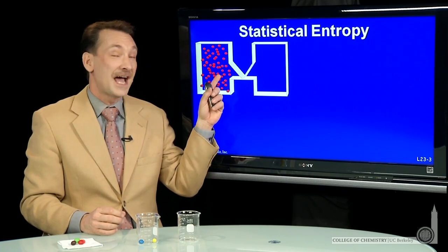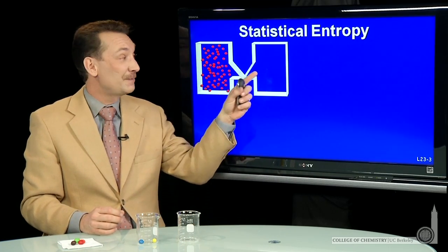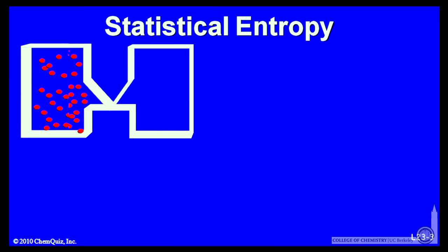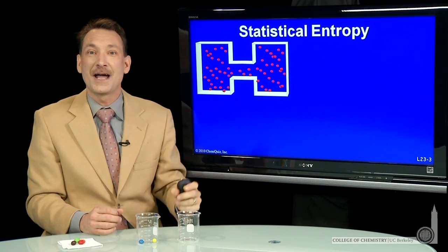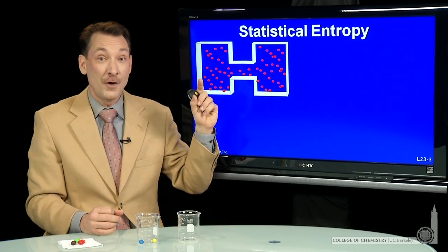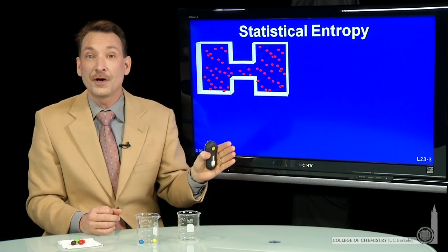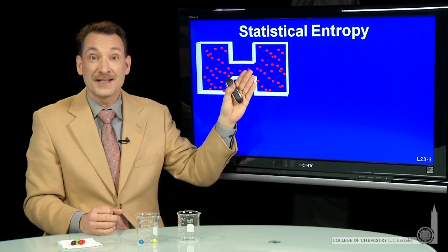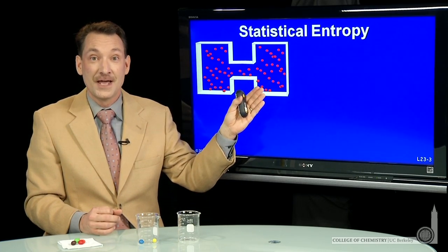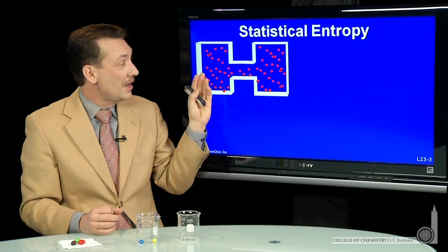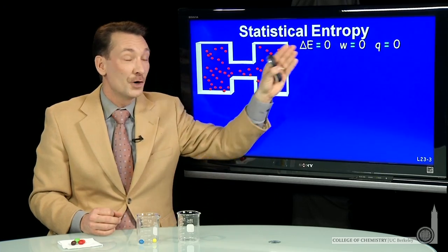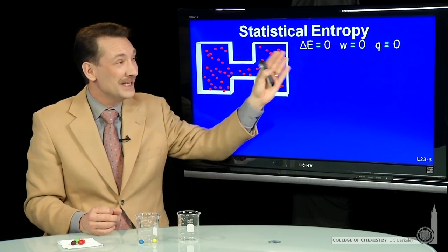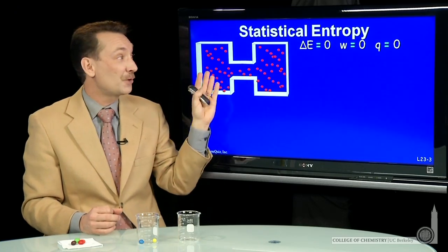Let's look at this physical process. This is a gas, and we're going to let it expand into a vacuum. We know this goes naturally — we never notice the gas compressing itself back to one side. When this process goes, expanding against a vacuum, no work is done. It's an isothermal process. No heat is absorbed or released. No energy changes. So this process has three thermodynamic parameters — energy change, work, and heat — all zero. There's no indicator among our thermodynamic parameters that this process will even proceed.